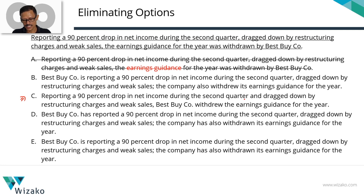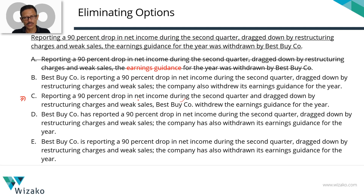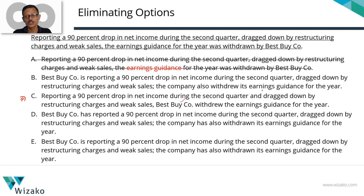'Reporting a 90% drop in net income during the second quarter and dragged down by restructuring charges and weak sales, BestBuyCo did something.' So who was reporting a 90% drop? BestBuyCo was reporting a 90% drop — so to that extent, for this part, it is absolutely right. But we are also saying 'dragged down by restructuring charges and weak sales.' When we use 'and' here, we are talking about two events: first, reporting a 90% drop; second, it was dragged down by restructuring charges. That 'it' is referring to BestBuyCo.